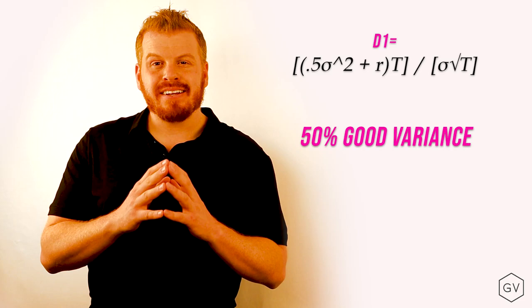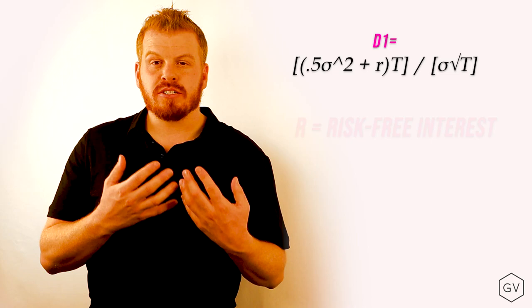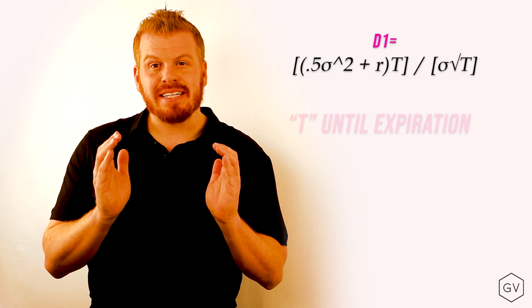We also add the risk-free interest rate because until expiration, theoretically, the stock should at least earn the risk-free interest rate. We then times that by T because we're only going to earn that variance in that risk-free interest rate until expiration.